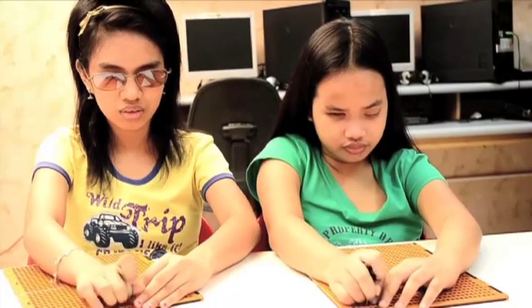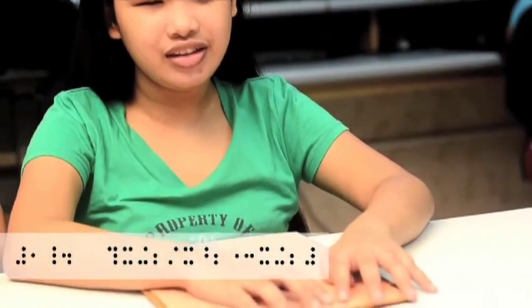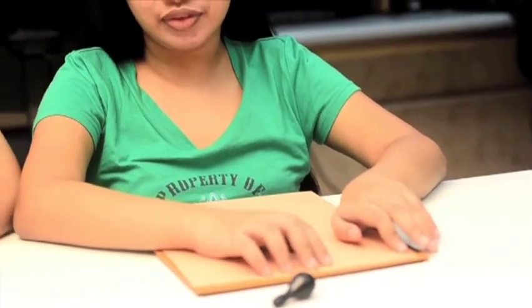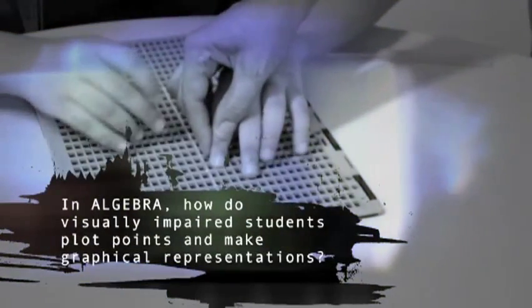And next one, m squared minus 12m plus 36. Read the first equation, Angelica. X plus 2 over x squared plus 3x plus 2. Second equation, Edleian. The square root of m squared minus 12m plus 36. Very good.